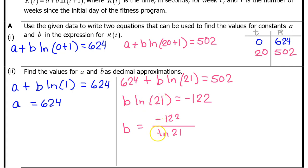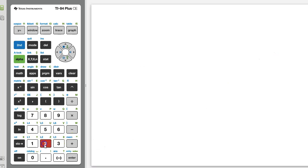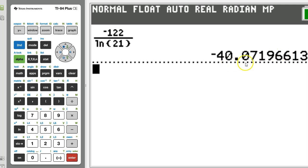We can get b by itself by dividing both sides by ln(21). FRQ2 is calculator active, so we can simply type this expression into the calculator. First, reset your calculator by hitting 2nd plus 7 1 2. Always start off with a fresh calculator. We need -122 over ln(21). The college board will accept three decimal places. However, students often make a mistake trying to round to three decimal places, and they wind up losing a point. So my recommendation is always use four decimal places and never try to round. So let's write down -40.0719.